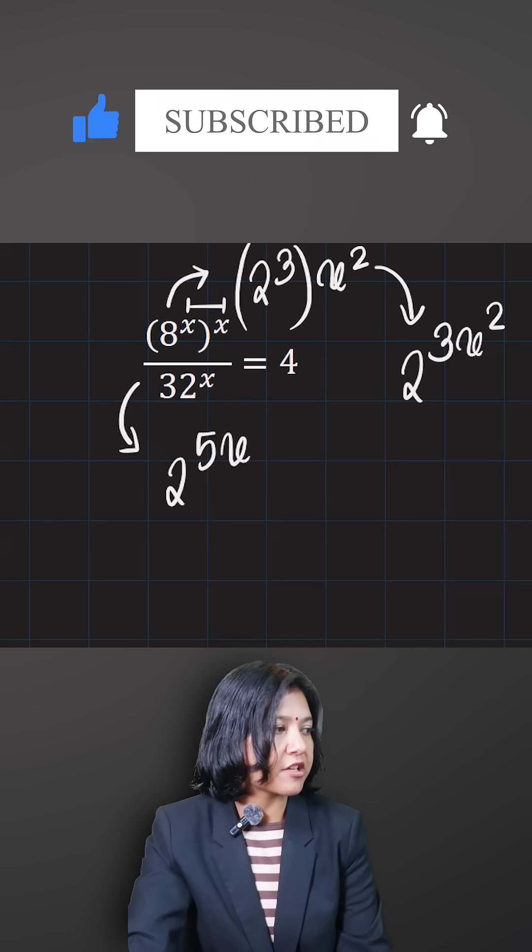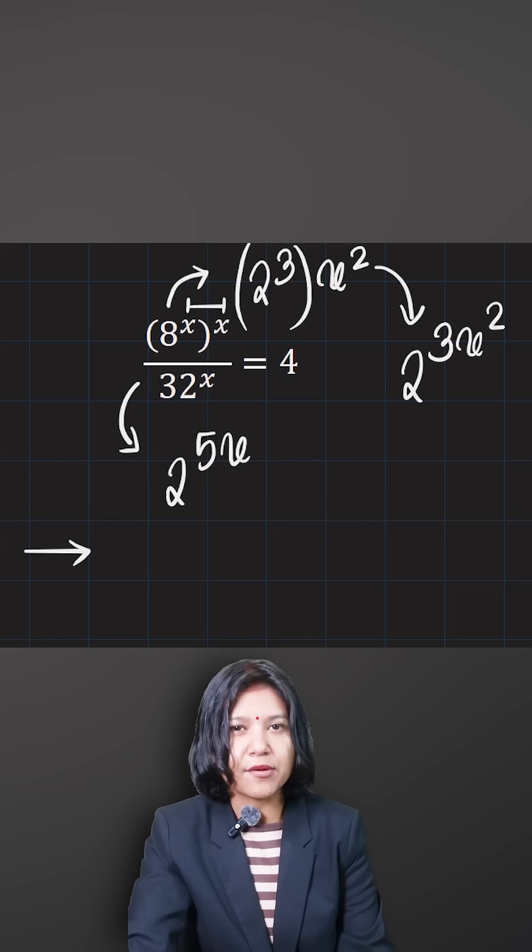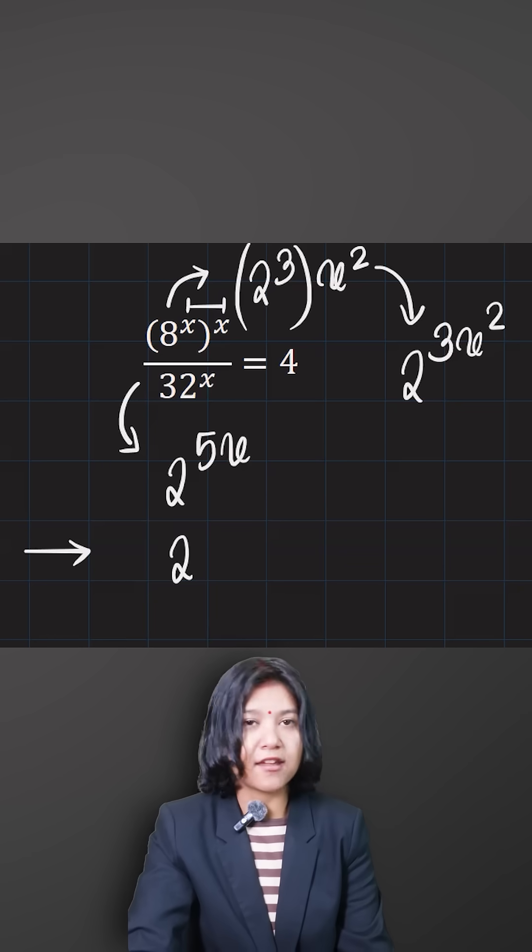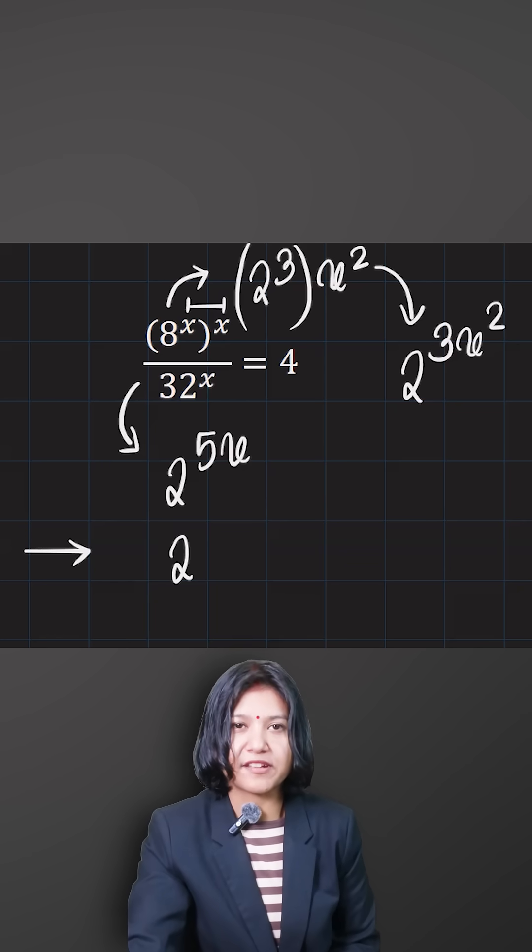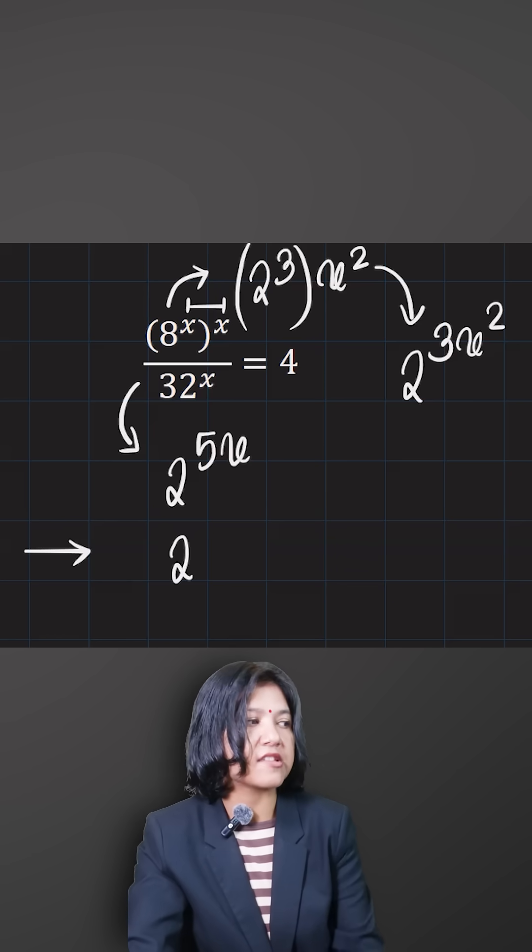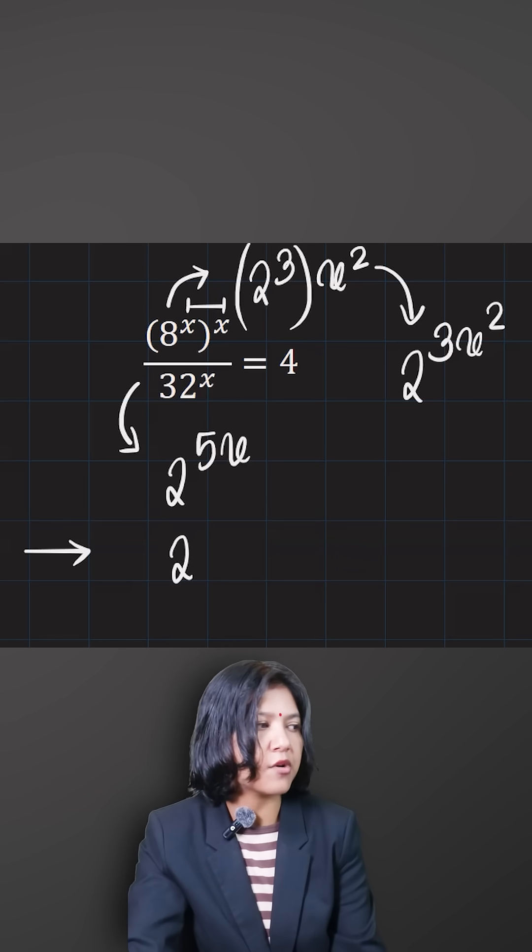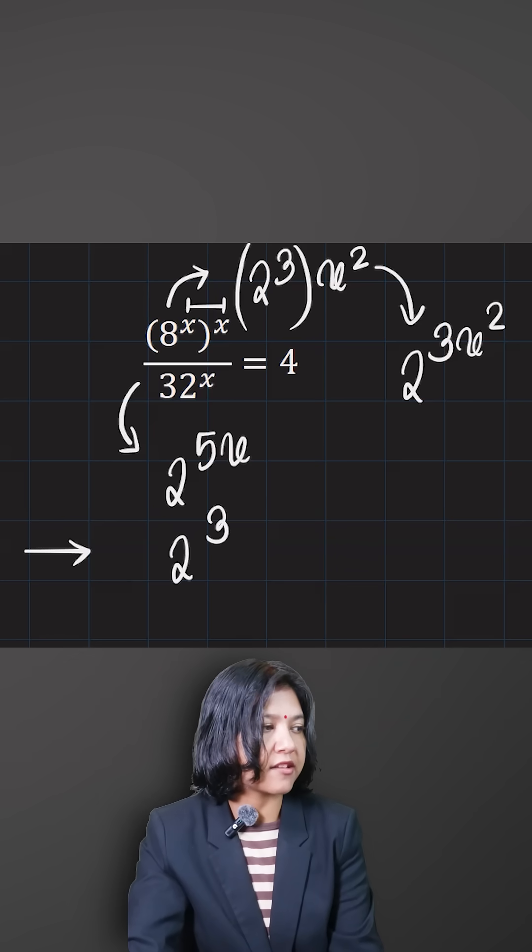You clearly see your numerator and denominator are both now expressed in powers of 2. The rules of exponents tell us that if we have the same base dividing with different powers, we have to subtract the power.